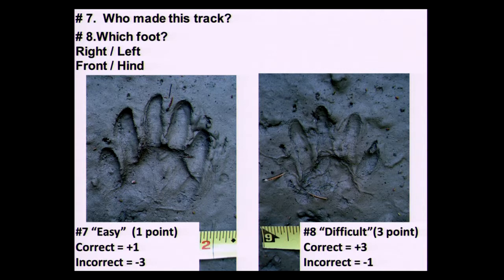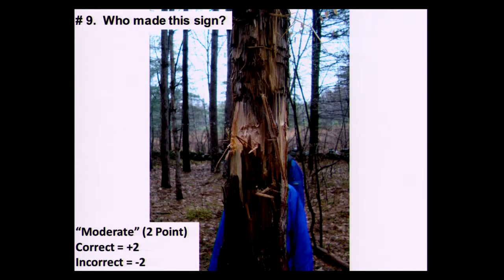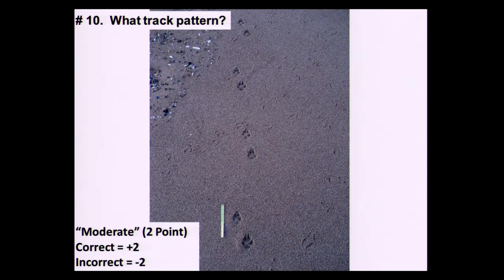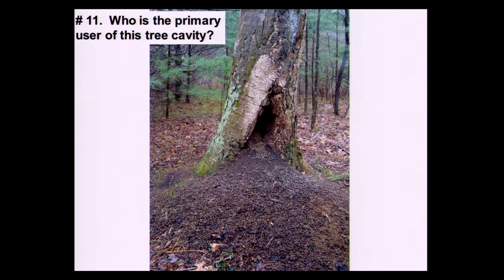This one is not on the island — it's a black bear bite mark on the side of a tree. Two points correct, minus two incorrect. This is a side trot pattern, or just trot would be fine. And this one is a porcupine, with scat pouring out of the bottom of the tree. You might have seen that in field guide pictures — it's always quite impressive to see. That was an easy question where I'm from. We can change the scoring to difficult since they're not on the island — so three if you got it correct, one off if you didn't.